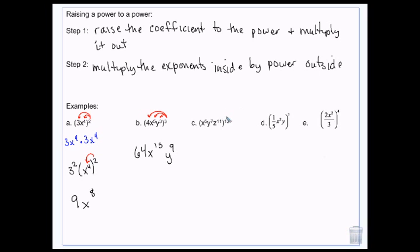Here, I'm going to raise all of these to the power of 12. So I'm going to do 5 times 12, which is 60. 7 times 12, which is 84. And 11 times 12, which is 132.